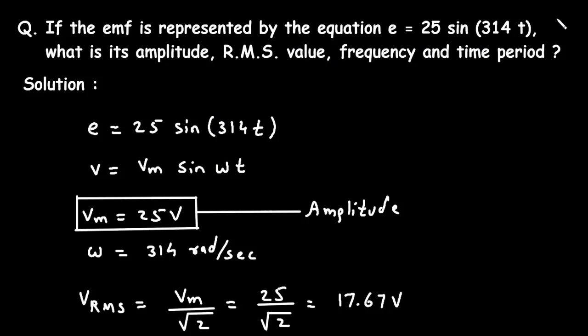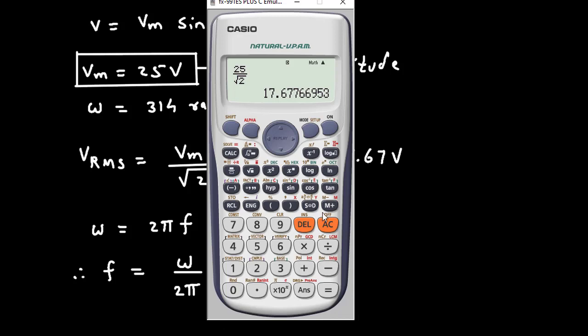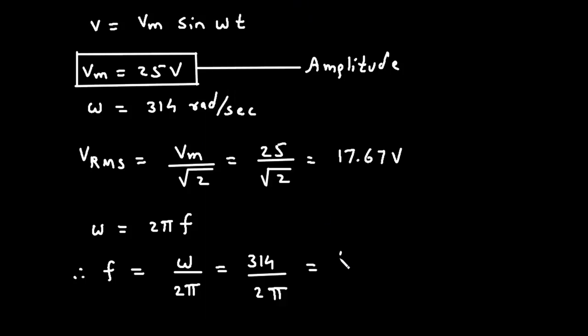Then next we have to find frequency. We know that omega equals 2 pi F, so F equals omega upon 2 pi. Omega value is 314 divided by 2 pi, which equals 49.97, approximately equal to 50 hertz.